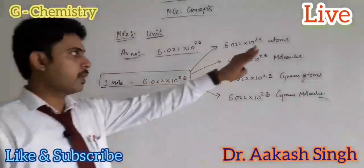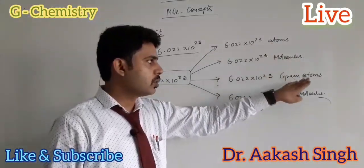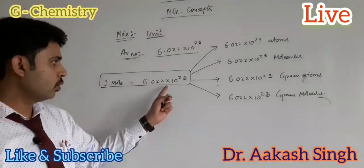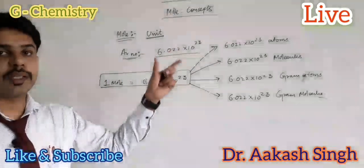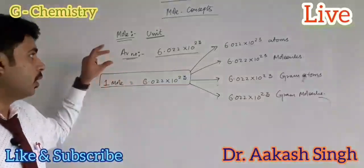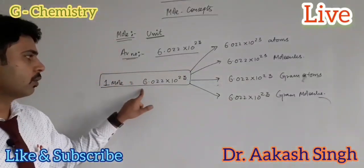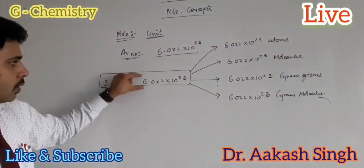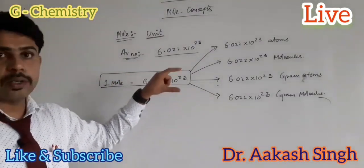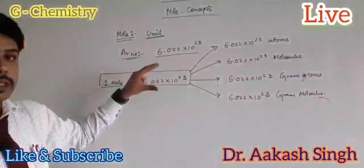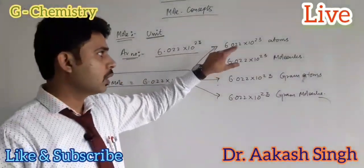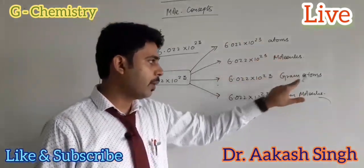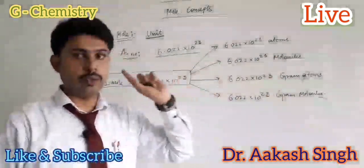All these things — atoms, molecules, gram atoms, gram molecules — have the same value, that is 6.022 into 10 to the power 23, and that is Avogadro's number. So 1 mole is equal to 1 mole atom, 1 mole molecule, 1 mole gram atom, 1 mole gram molecule.